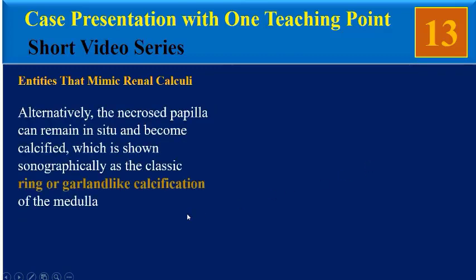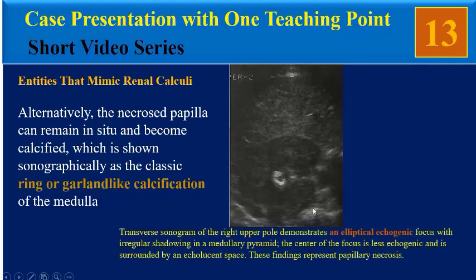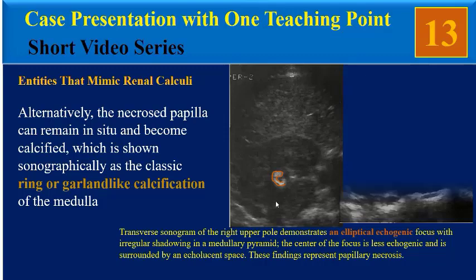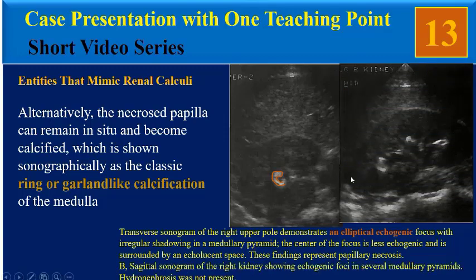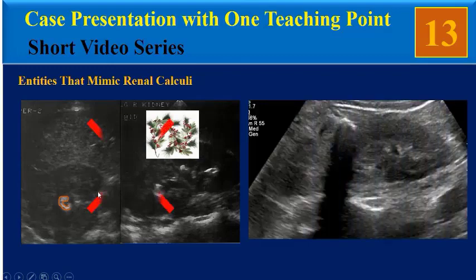Alternatively, the necrosed papilla can remain in situ and become calcified, which is shown sonographically as the classic ring or garland-like calcification of the medulla. This transverse sonogram of the right upper pole demonstrates an elliptical echogenic focus with irregular shadowing in a medullary pyramid. The center of the focus is less echogenic and is surrounded by an ecolucent space. These findings represent papillary necrosis. A sagittal image shows echogenic foci in several medullary pyramids, similar to a garland-like calcification. Our patient is not compatible with this entity.